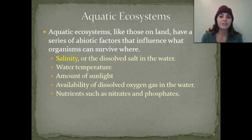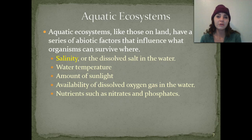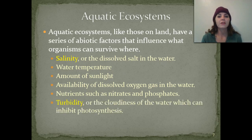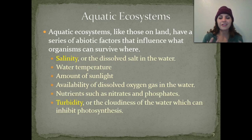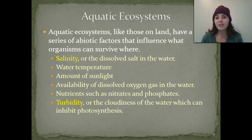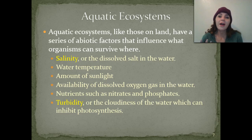Nutrients such as nitrates and phosphates are also abiotic factors found in aquatic ecosystems. And turbidity — turbidity is basically the cloudiness of the water, which can inhibit photosynthesis. We're going to use something called a Secchi disk later in the year to determine turbidity, or how turbid the water is.